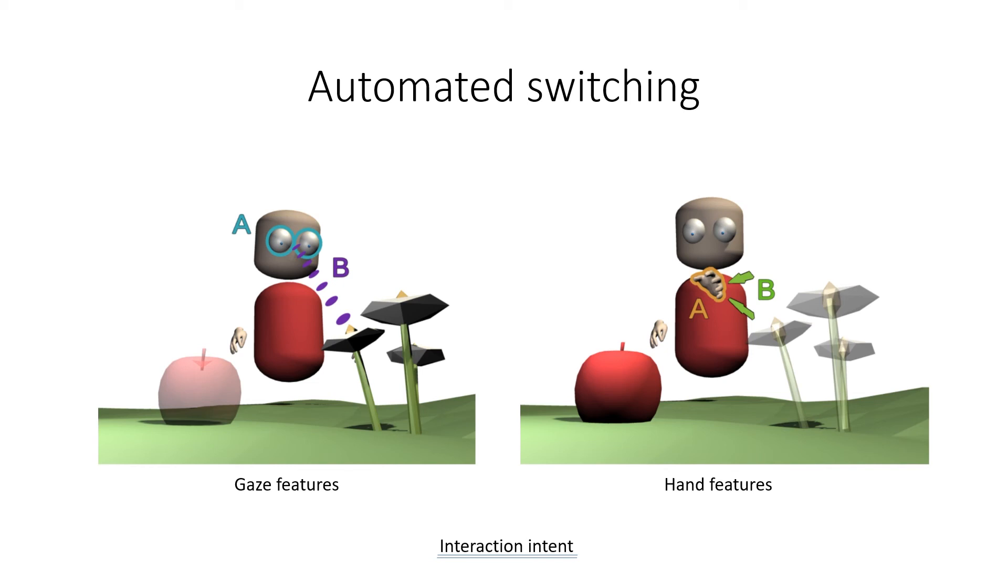Therefore, a promising future development for the technique could be to automatically switch the active viewpoint. Similarly, this could be based on an algorithm that infers the user's interaction intent from such factors as gaze point, gaze dynamics, and the state and motion of the user's hand, and based on these factors, automatically switches to the viewpoint that corresponds to the best estimate for interaction intent.